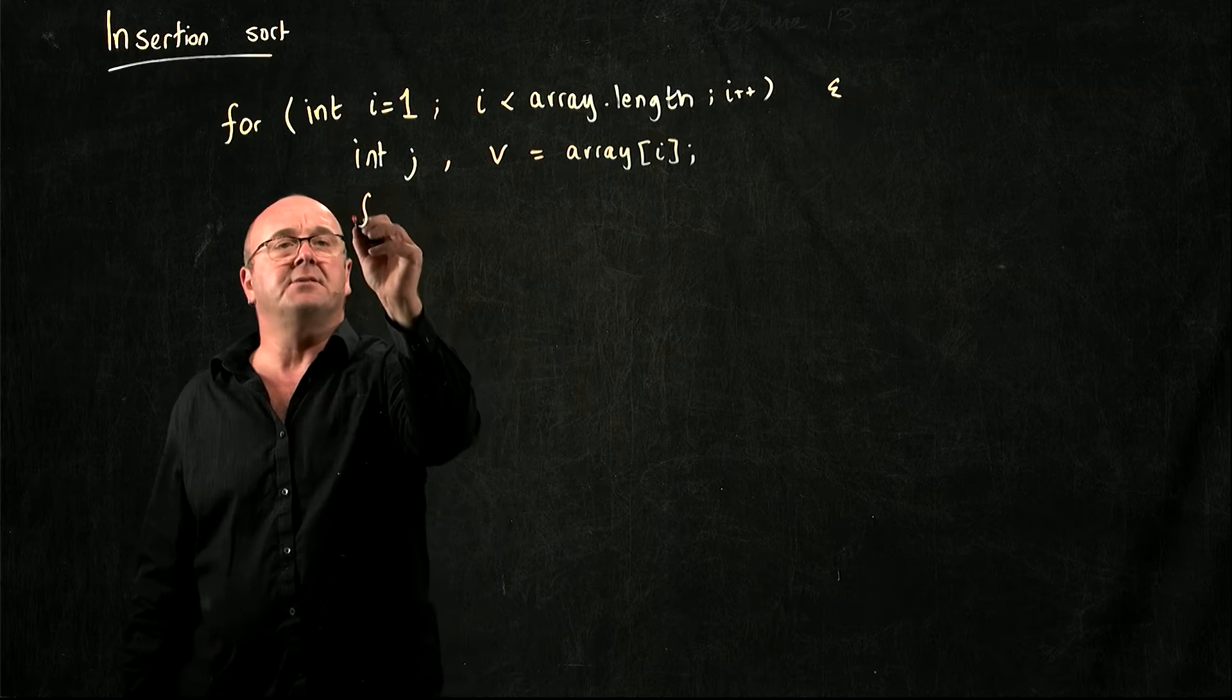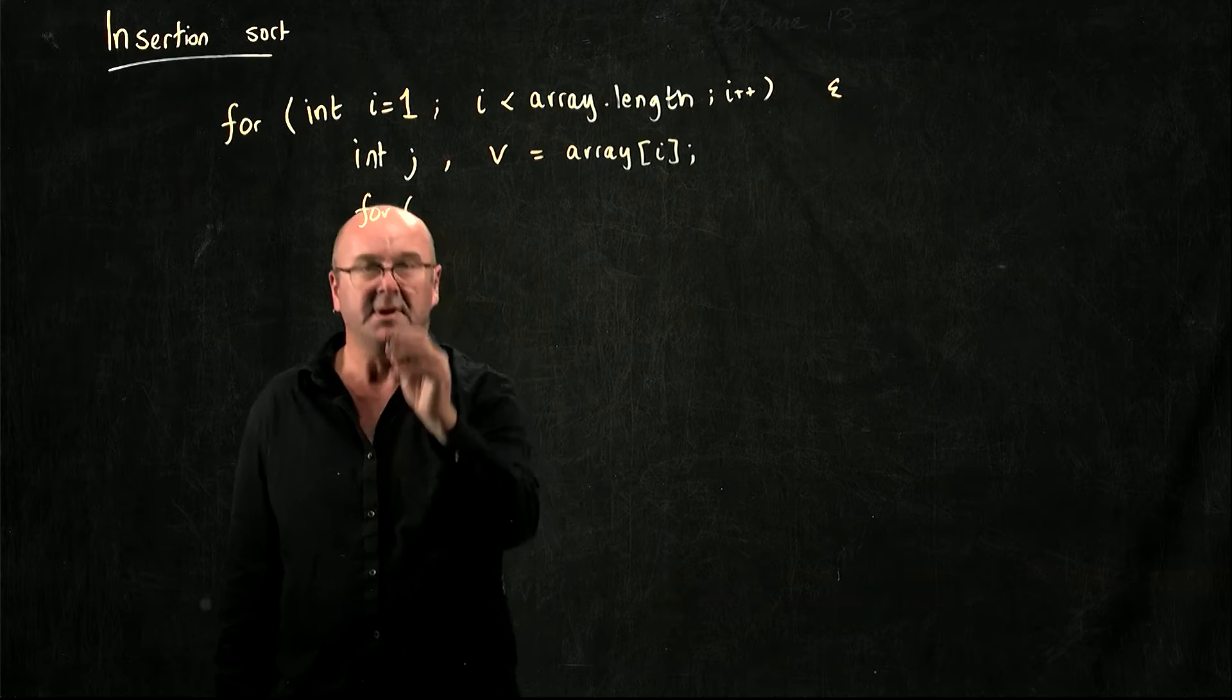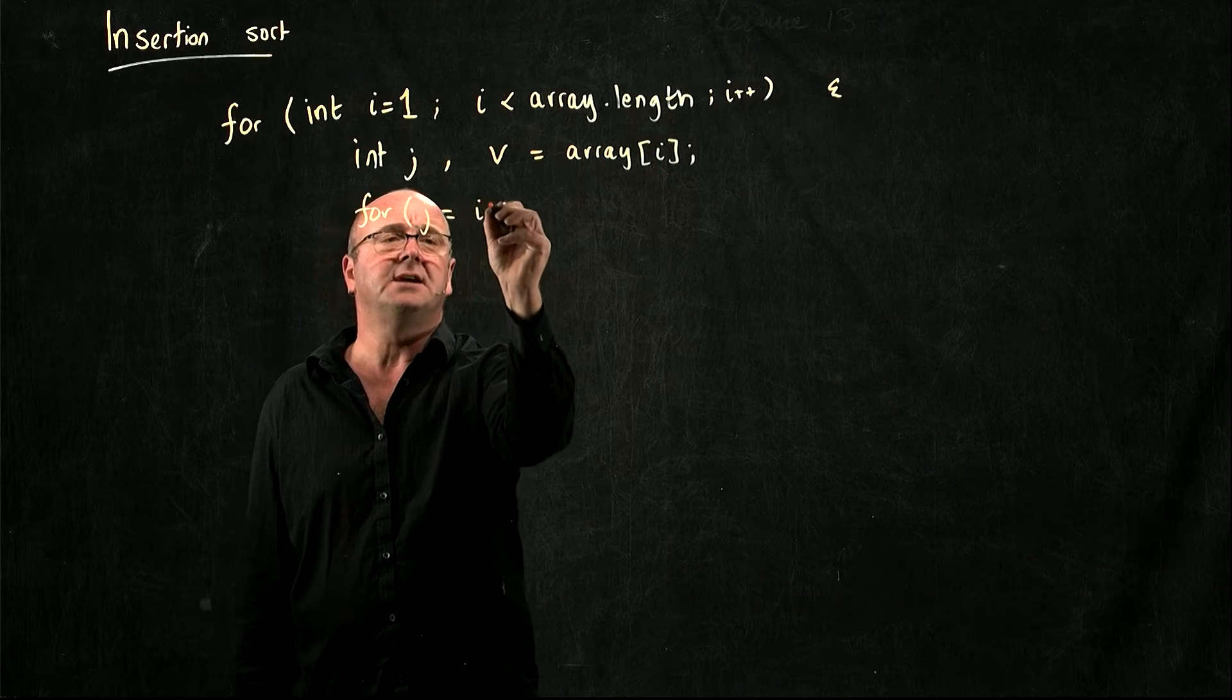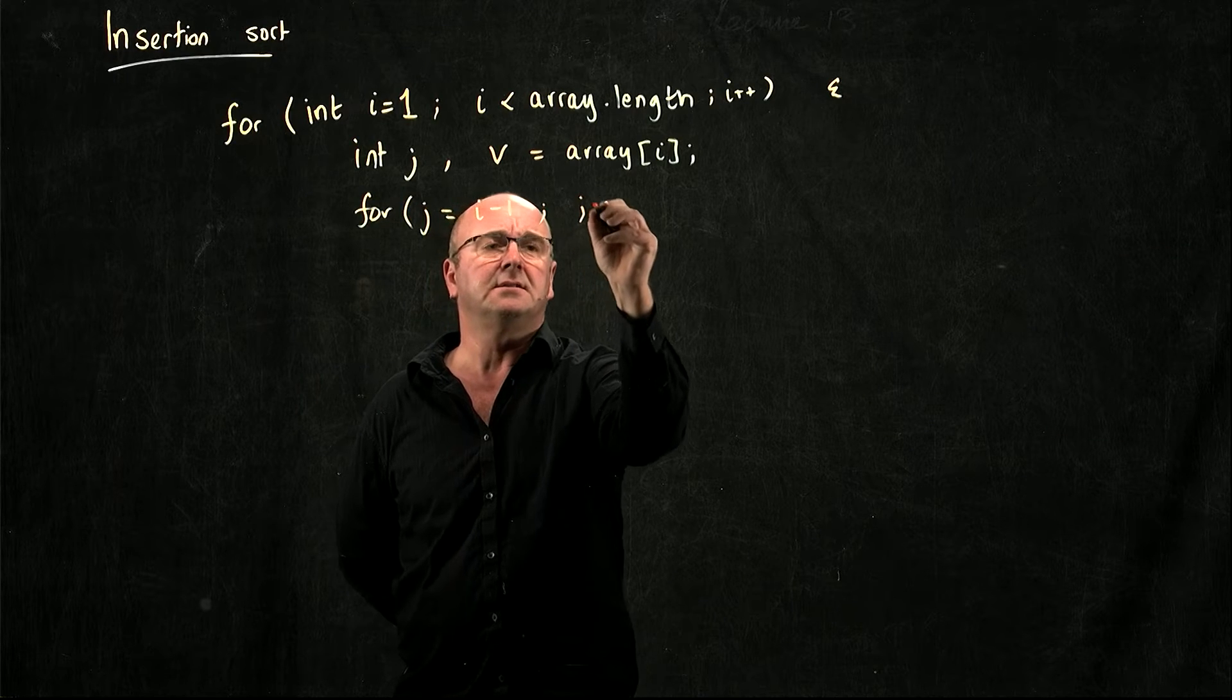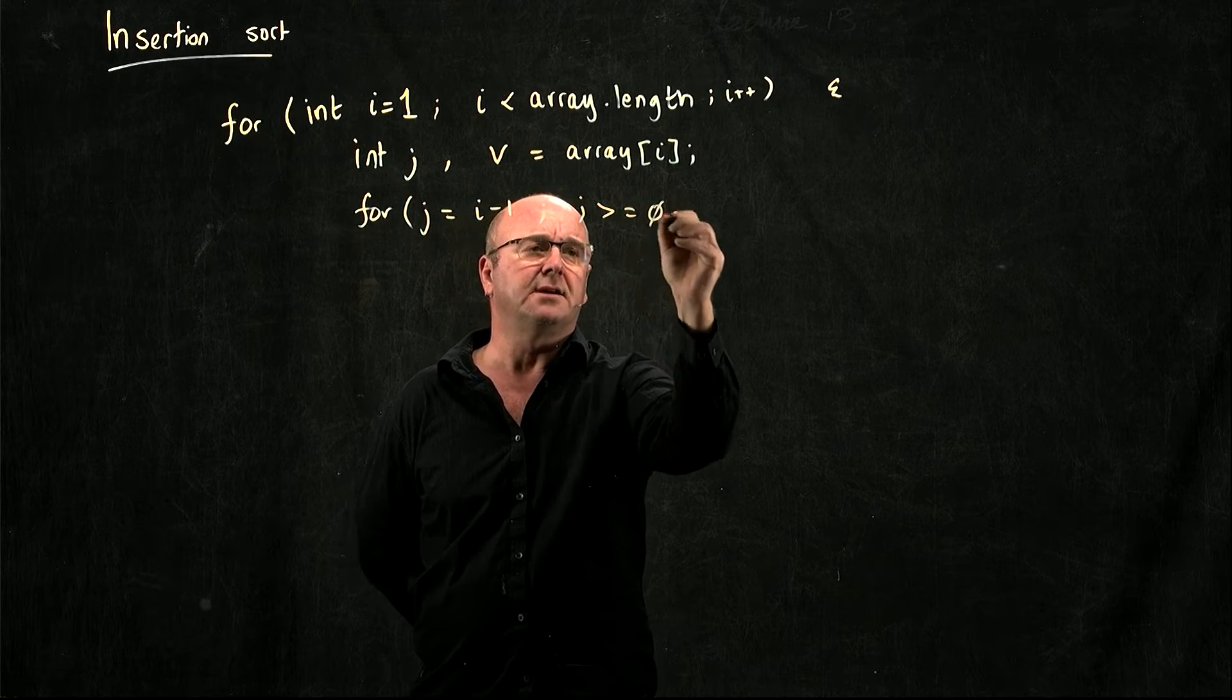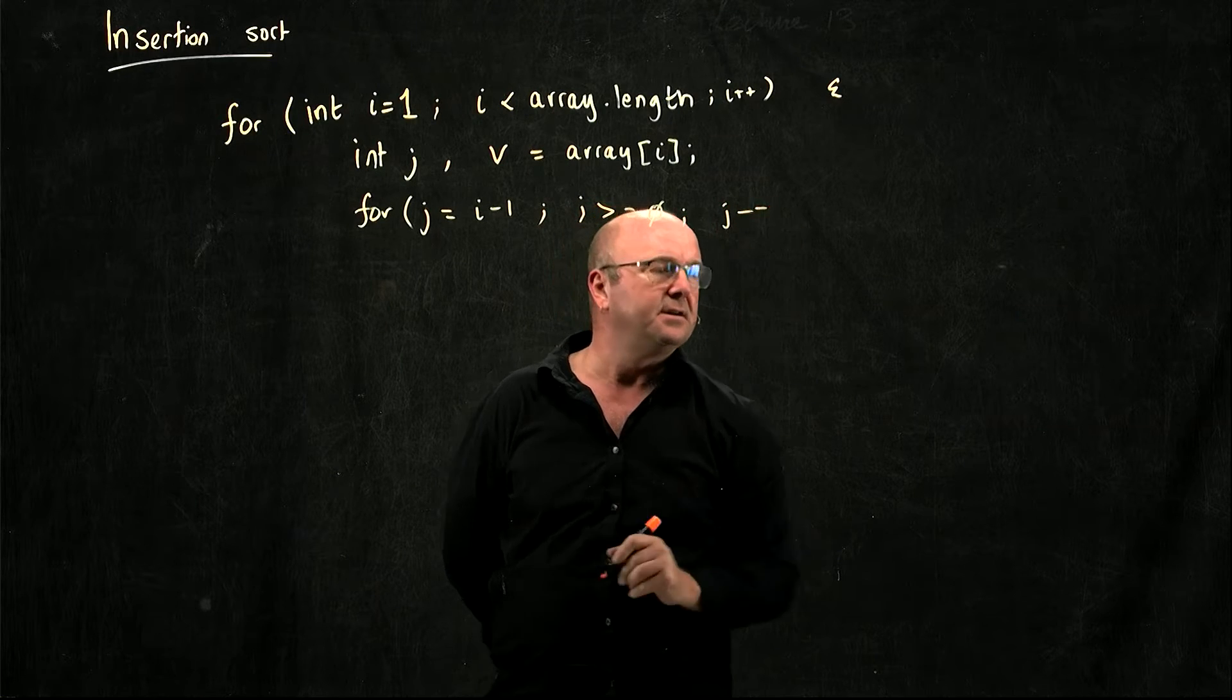Then I can just go through my list, starting with j equal to i minus one, until j is greater than or equal to zero, and I'm going to decrease j.